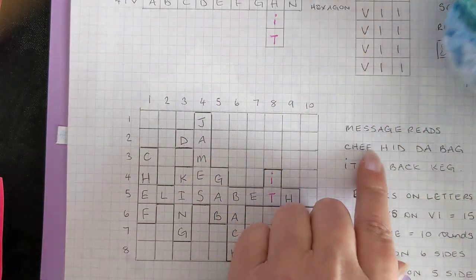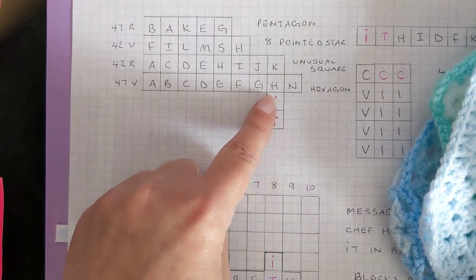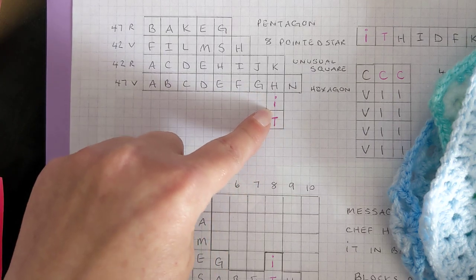The message says 'chef hid da bag it in back keg.' The way that I got that was I did have to change the H by using the other code where you break it up into portions.